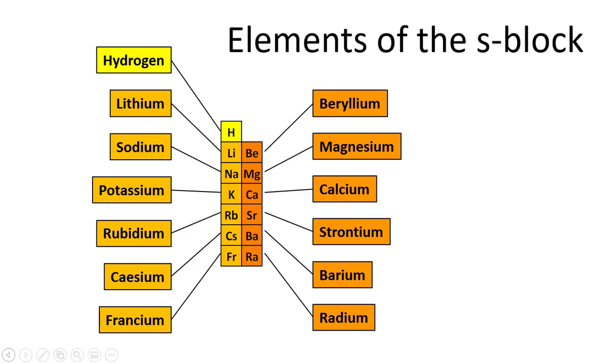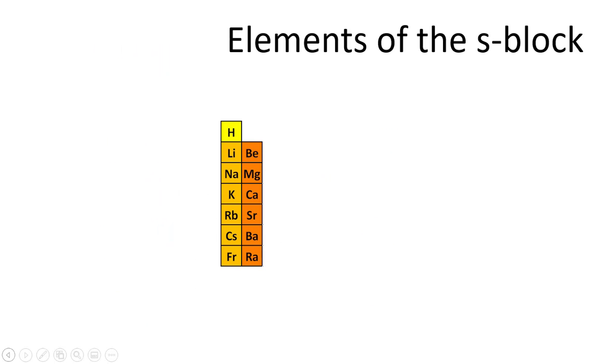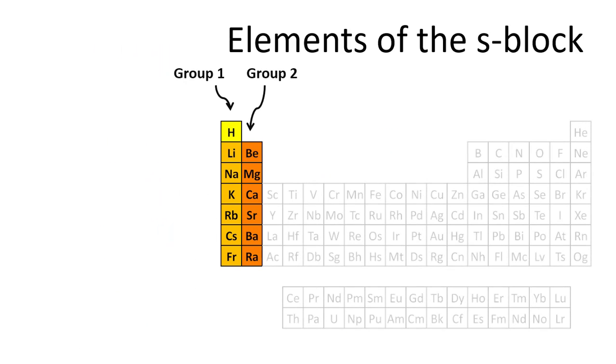The S block is composed of the first two groups of the periodic table, known as group 1 and group 2. Why this part of the table is known as the S block will become clear later on in the course.